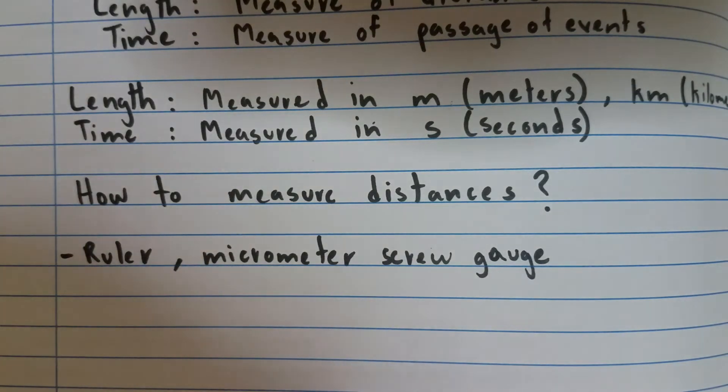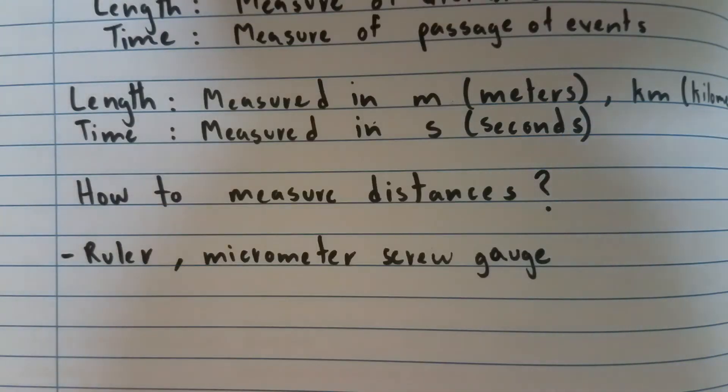Or if you're really talking about very tiny distances like measuring the diameter of a lead in your pencil then you could use a micrometer screw gauge. It's very accurate. You can measure the distances with a micrometer to the hundredth of a millimeter.